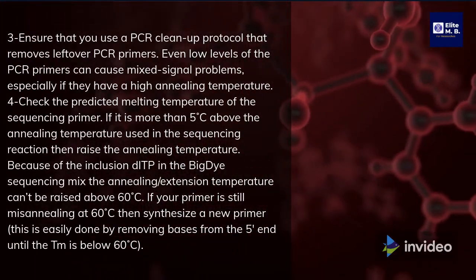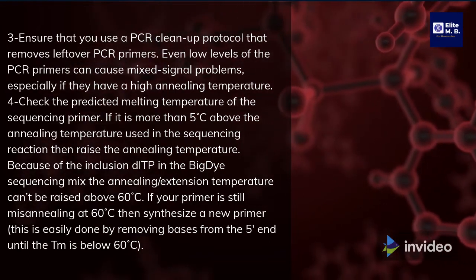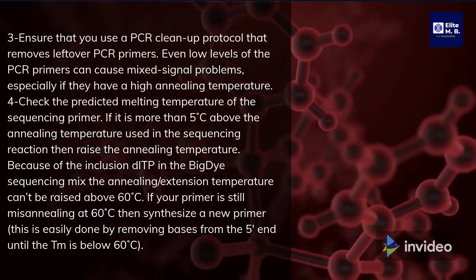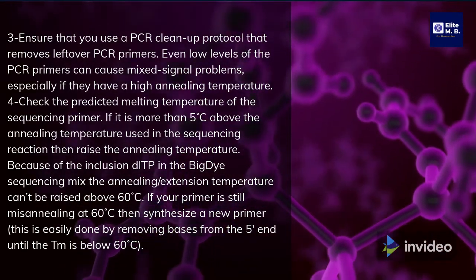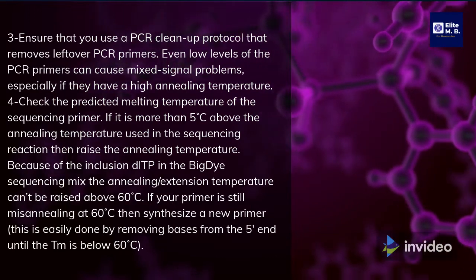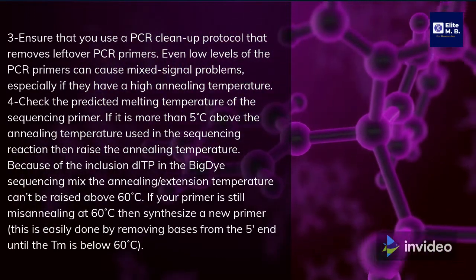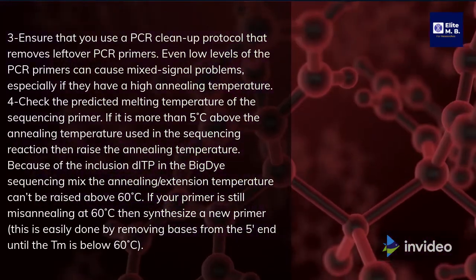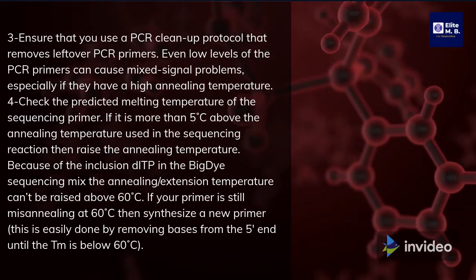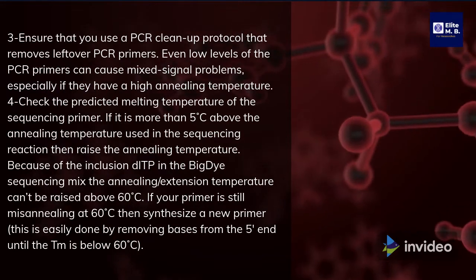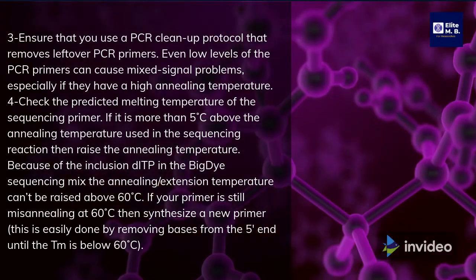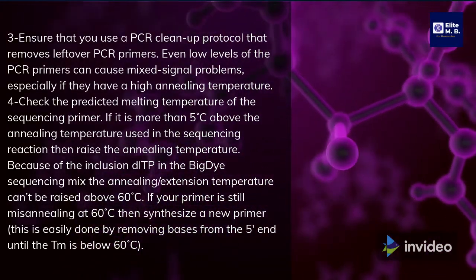Ensure that you use a PCR cleanup protocol that removes leftover PCR primers, as even low levels of PCR primers can cause mixed signal problems, especially if they have a high annealing temperature. Check the predicted melting temperature of the sequencing primer — if it is more than 5°C above the annealing temperature used in the sequencing reaction, raise the annealing temperature. Due to the inclusion dip in the Big Dye sequencing mix, the annealing/extension temperature cannot be raised above 60°C. If your primer is still misannealing at 60°C, synthesize a new primer by removing bases from the 5' end until the Tm is below 60°C.